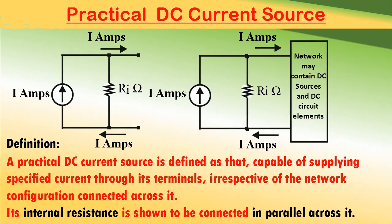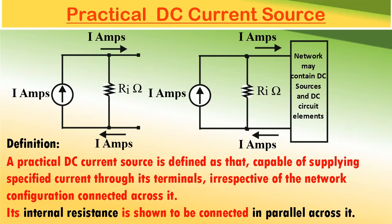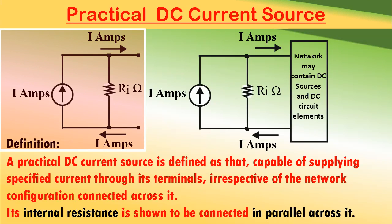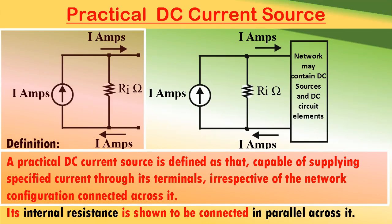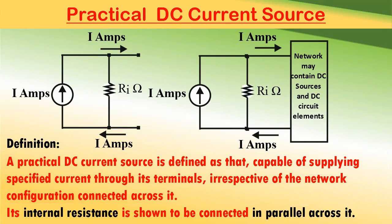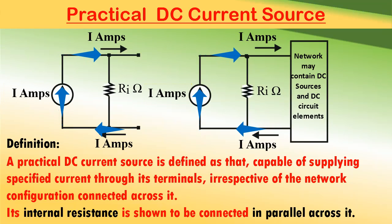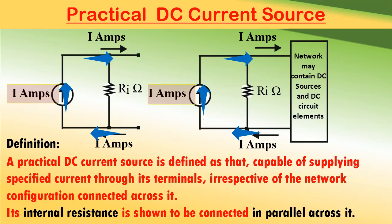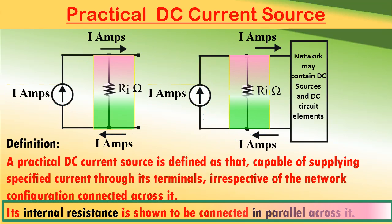Now let us see what is a practical DC current source. A practical DC current source can be defined as that which is capable of delivering a specified current through its terminals irrespective of the network configuration connected across it. But its internal resistance is shown to be connected in parallel with the source as shown in the figure.